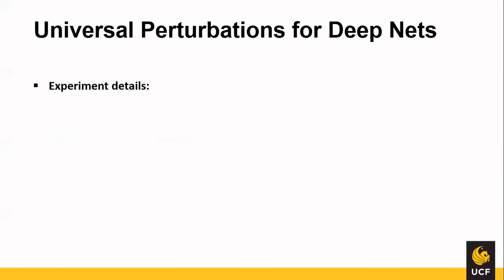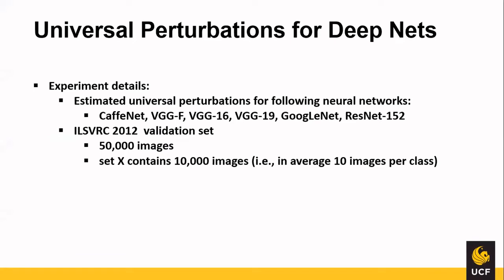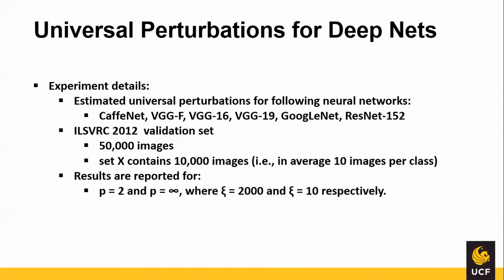In their experiments, they estimated universal perturbations for six architectures using the ILSVRC ImageNet validation set of 50,000 images, selecting 10,000 images to calculate the perturbations — about 10 images per class. Results are reported for L2 norm with epsilon equal to 20,000 and L-infinity with epsilon equal to 10. These values were chosen so that the perturbation norm is significantly smaller than the image norm.